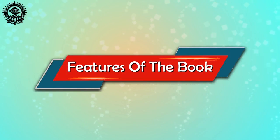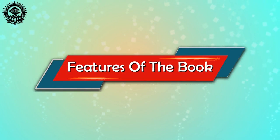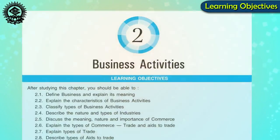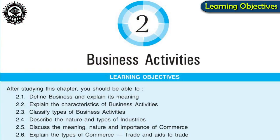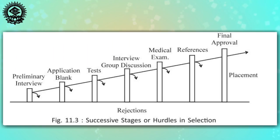Now, let's have a look at the various features of the course book. Each chapter starts with learning objectives. This section presents an overview of the topics that are going to be discussed in the chapter.